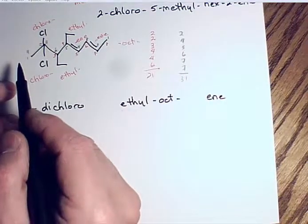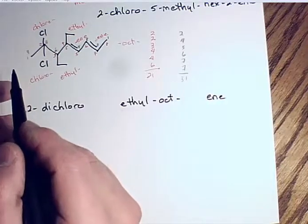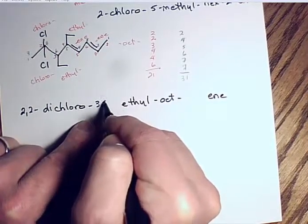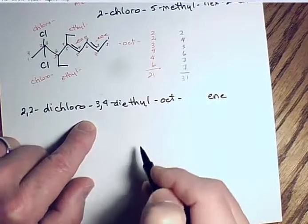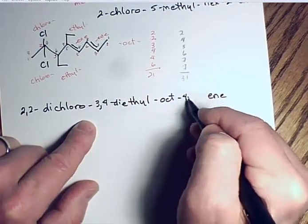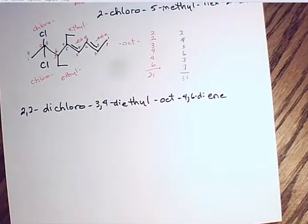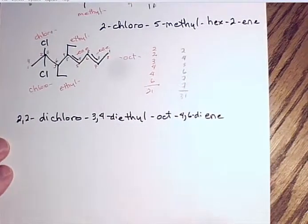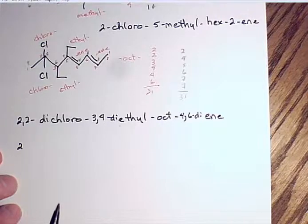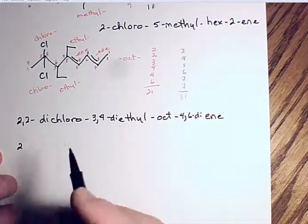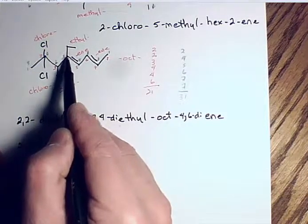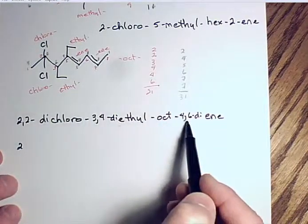Since we have two chloro groups both on carbon two, that's '2,2-dichloro.' If two groups are both on carbon two, you say '2,2' — not '1,2.' Ethyl groups are on three and four: '3,4-diethyl.' Then 'oct' for the main chain, and the diene is on carbons four and six — '4,6-diene.' For double or triple bonds, you number the first carbon where you encounter that functional group.